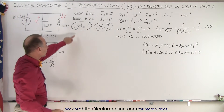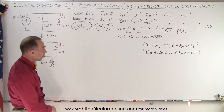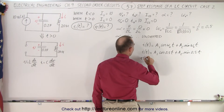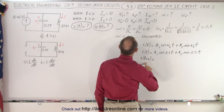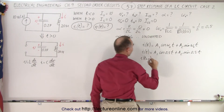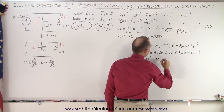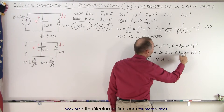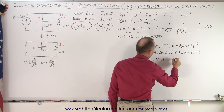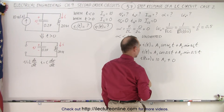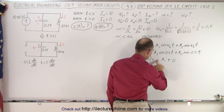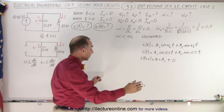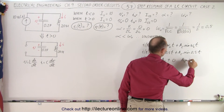We have the equation for the current, except we don't know A1 and A2. We need to use initial conditions. I at time equals zero is equal to 10 amps, so: 10 = A1 times cosine(0) which is 1, plus A2 times sine(0) which is 0. We can clearly see that A1 is equal to 10.